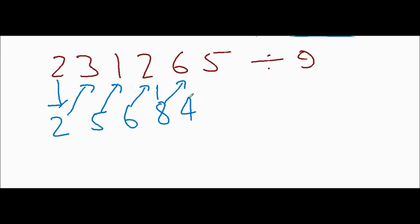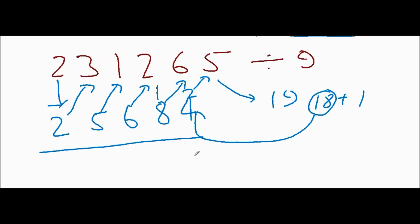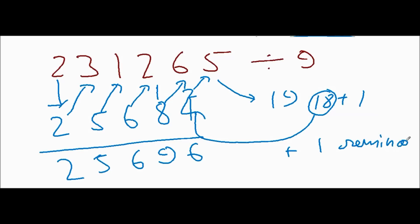14 plus 5 is 19 — 19 should be the remainder, but since 19 is greater than 9, you can extract 18 from it, which is divisible by 9 two times. So you write 19 as 18 plus 1, and 18 divided by 9 is 2, so you add 2 as carry, and 1 is the remainder. So our final answer is 2, 5, 6, 9, and 6 with remainder 1.